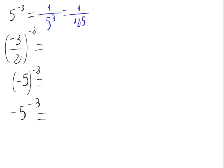On the second example, we have a fraction raised to a negative number. So, we just have to put the numerator on the denominator, and vice versa. That is, 2 divided by minus 3, and the minus sign goes away, so it is raised to the power of 2.